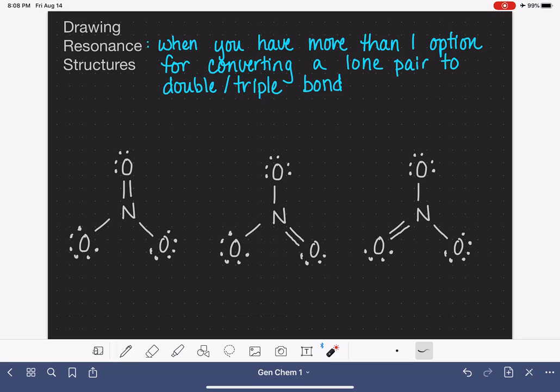So when you're drawing a Lewis structure and you need to convert a lone pair to a double bond and you find that you have several lone pairs that you can convert to a double bond, and by that I don't mean that we could have taken this lone pair or this lone pair or this lone pair, but I mean several different atoms that you could use to make the double bond or triple bond, then you have what we call resonance.